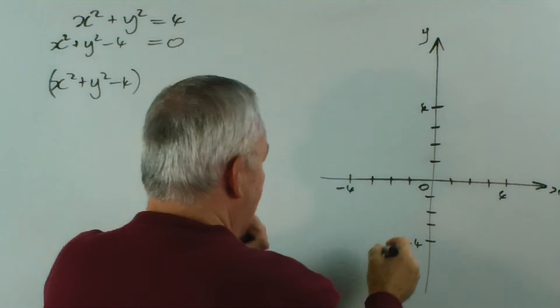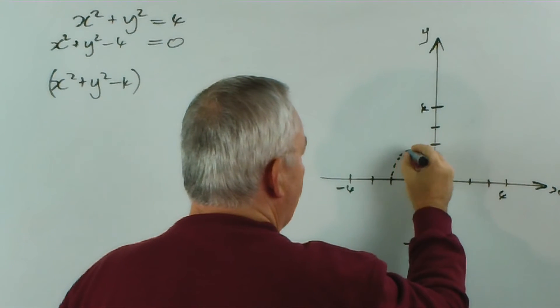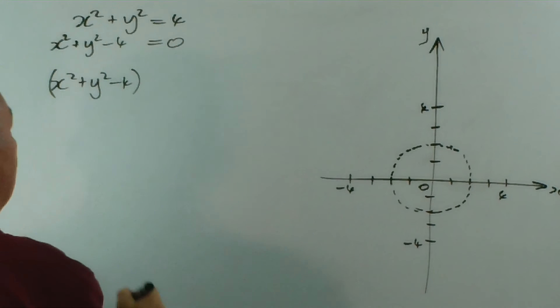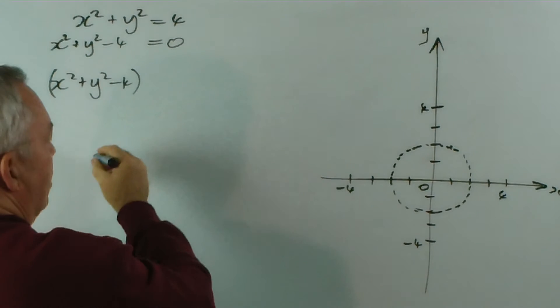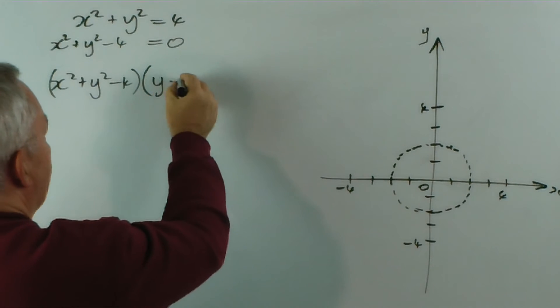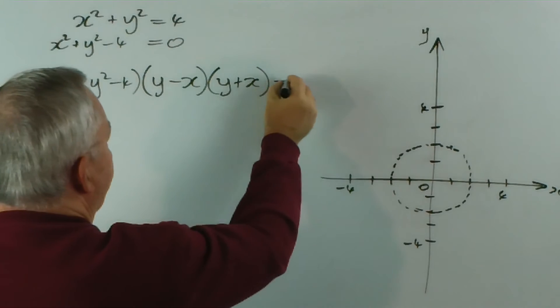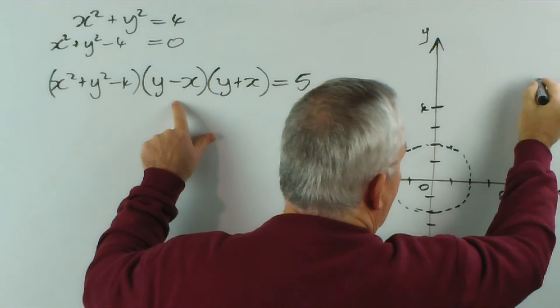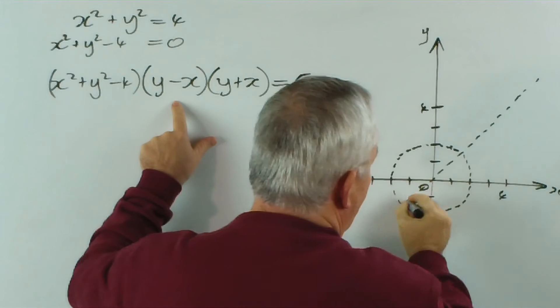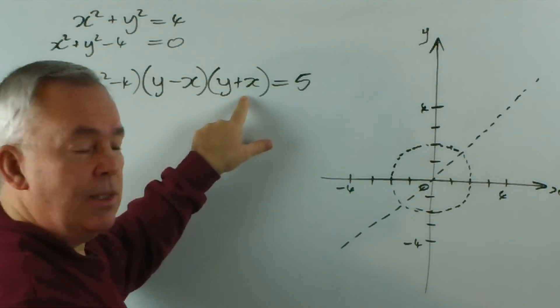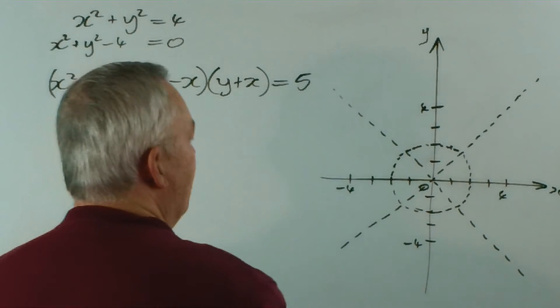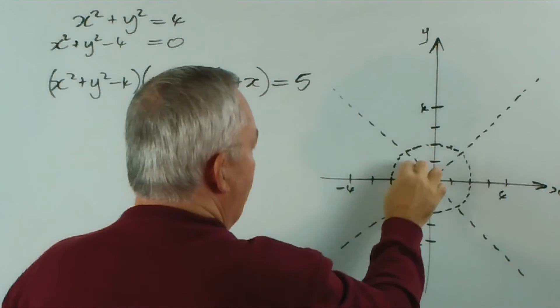Okay. So the circle is going to have a radius of 2. Here we go. What we might do is... Let's do this. Let's put y minus x and y plus x. And let's make it equal to some number. So y minus x will give us y equals x as an asymptote. And this will give us y equals minus x as an asymptote. So now we have 1, 2, 3, 4, 5, 6, 7, 8 regions.